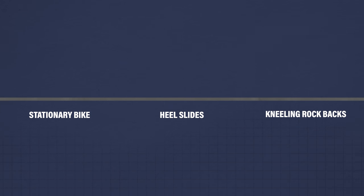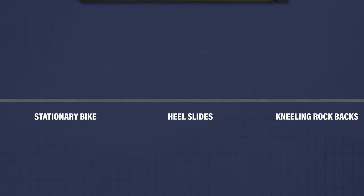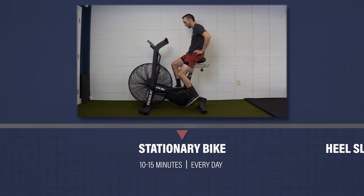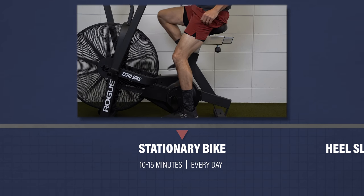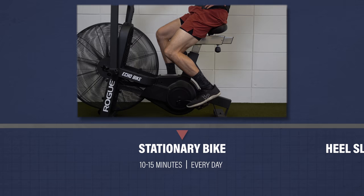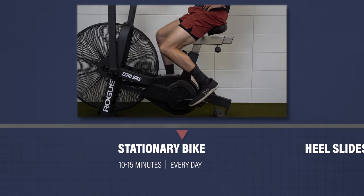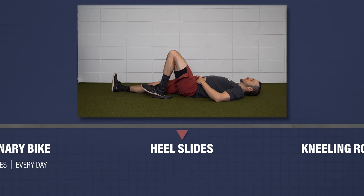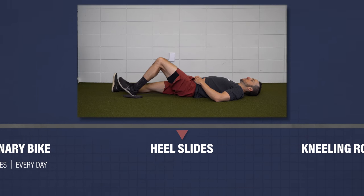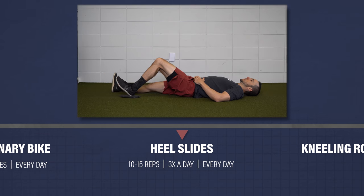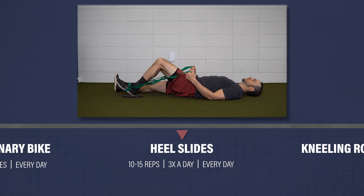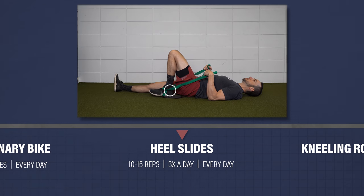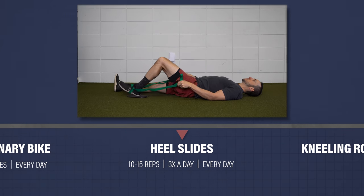For knee flexion or bending, here are three options. You can use a stationary bike, starting with the seat at a higher level — as range of motion improves, lower the seat to expose the knee to more flexion. Another option is heel slides using a slider on carpet or a towel on a hard surface. Start by actively sliding your heel towards your butt for 10 to 15 repetitions. As motion improves, progress by using a towel or strap to pull the knee into more flexion. Do these often — at least three times a day, every day.